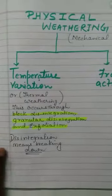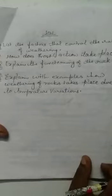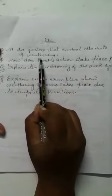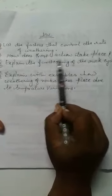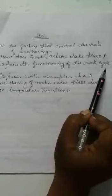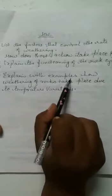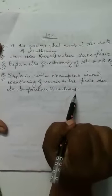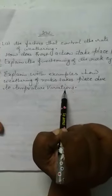Related to today's explanation, I have written four questions for your homework: List the factors that control the rate of weathering. How does frost action take place? Explain the functioning of the rock cycle. Explain with examples how weathering of rocks takes place due to temperature variations.